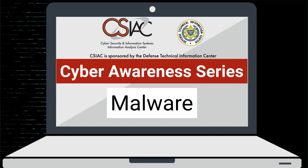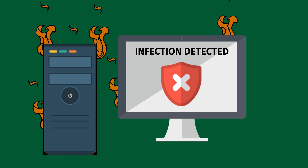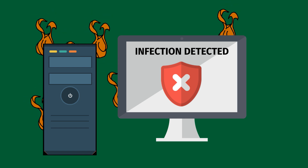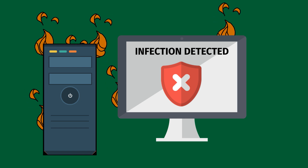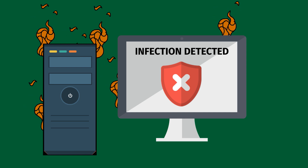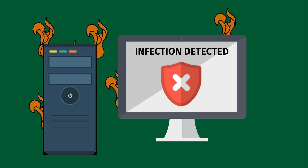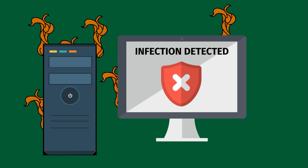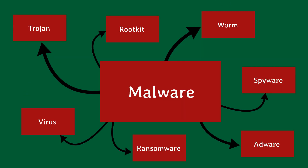In this portion, we'll address malware. Malware is the evil, malicious, and unwanted software that you desperately want to avoid getting. Malware costs individuals, companies, and governments more and more resources every year, and it requires everyone working together to prevent. Although many people just call everything a virus, malware is the big category. There are many different types of malware, and they each have their own unique mode of operation and behavior.